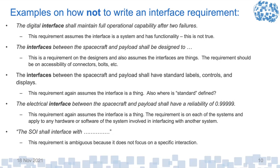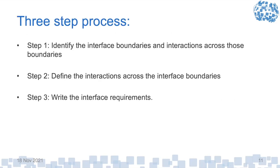The three-step process is: first, identify the interface boundaries and interactions across the boundaries; second, define the interactions across the interface boundaries and their characteristics; and third, write the interface requirements. In theory, this logical progression would happen. In practice, in a lot of the work I've done at NASA, we'd identify the boundaries and some interactions, then jump right into writing the interface requirements and point to TBD interface definitions. Later, once the definitions were actually defined, we would update the requirement document, remove the TBDs, and include a pointer to the definition.